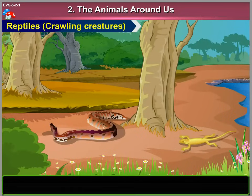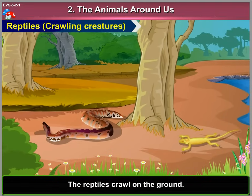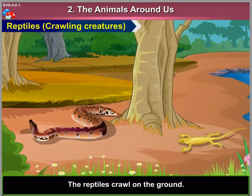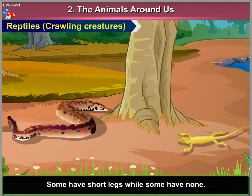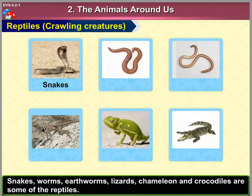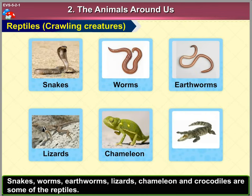4. Reptiles. The reptiles crawl on the ground. Some have short legs, while some have none. They are cold-blooded creatures. Snakes, earthworms, lizards, chameleons and crocodiles are some of the reptiles.